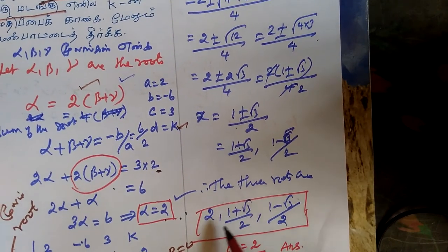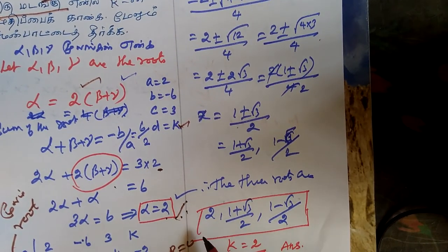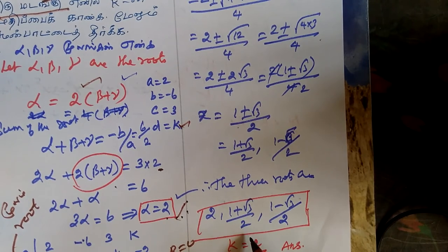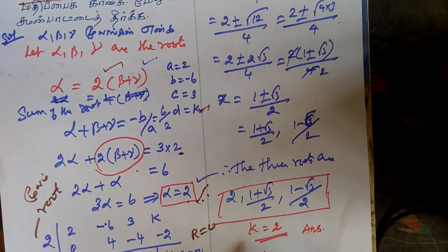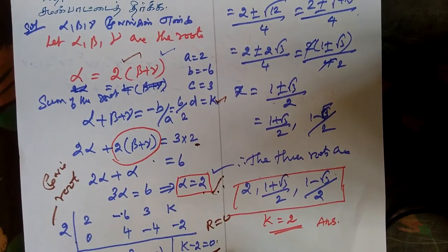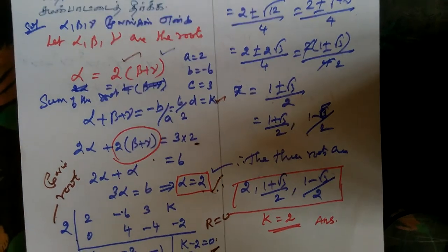Therefore, the three roots are α = 2, (1 + √3)/2, and (1 - √3)/2. And the k value is 2. Thank you.